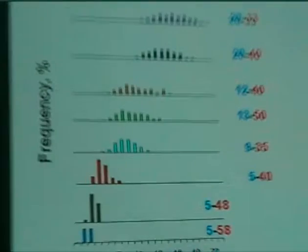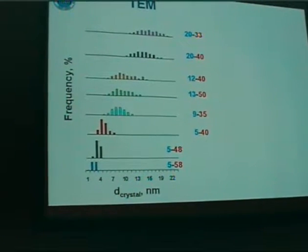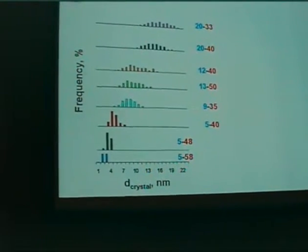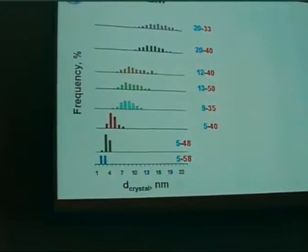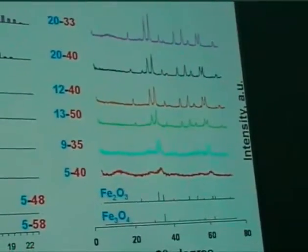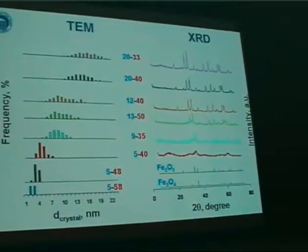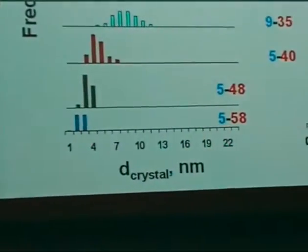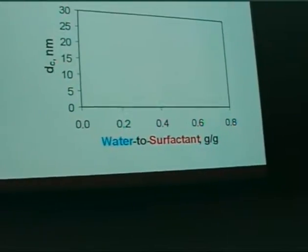The TEM evaluation is shown here. By increasing the water-to-surfactant ratio, we obtain an increase of the average crystallite size, and the crystallite size distribution is still sufficiently narrow for our study. We confirm these crystallite size trends with XRD analysis. The major phase present was Fe₂O₃, and going from top to bottom we see line broadening, confirming that the crystallites are smaller in those samples.